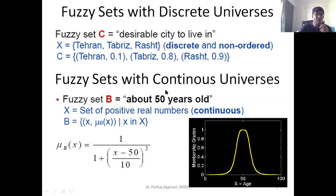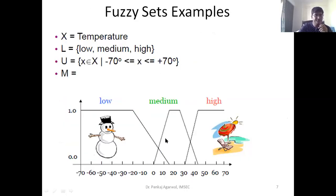Alternatively, there can be a representation associated with the continuous universe, by applying a function. If a function is defined in a certain way, every value of x put into that function results in a value which can represent a continuous form. So fuzzy sets can be both discrete as well as continuous.